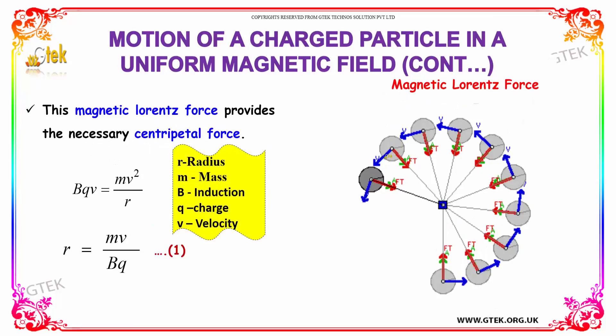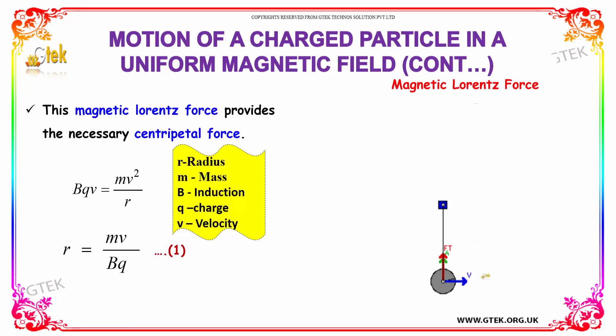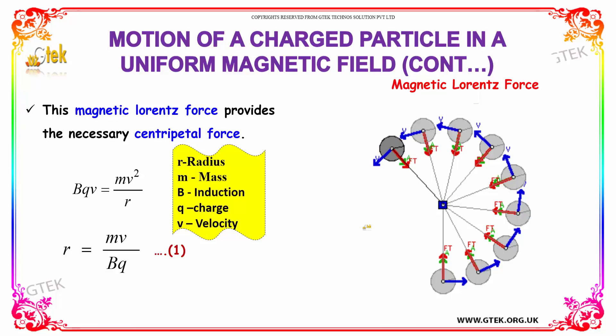So this is your magnetic Lorentz force. The magnetic Lorentz force provides the necessary centripetal force. So BQV equals MV square by R. So removing this V and V here and moving this R to this direction and BQ here, you got R equal to MV by BQ.